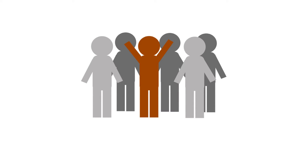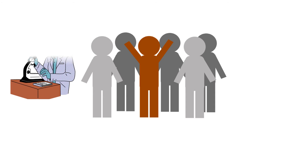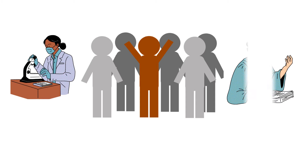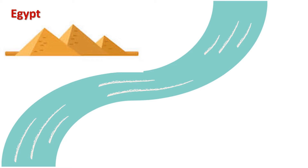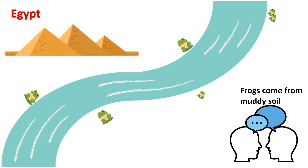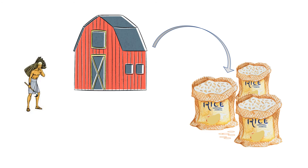Humans always wondered about how life came on Earth. As human nature — what we see, we believe. In ancient times there were no advanced scientific methods to prove our beliefs; whatever people observed became truth for them. For example, every year in the season of spring, the Nile River flooded the areas of Egypt along the river. After the flood, in muddy soil, large numbers of frogs appeared that were not around in drier times, and that made people believe that muddy soil gave rise to the frogs.